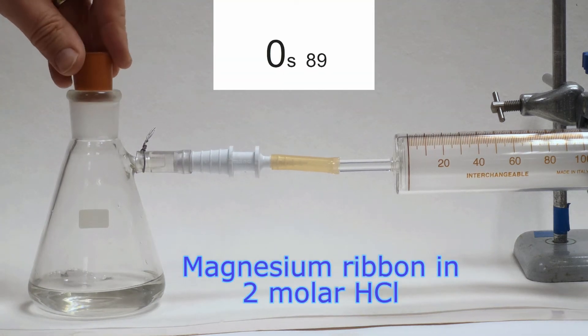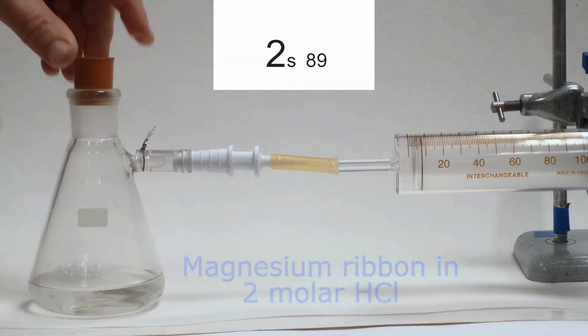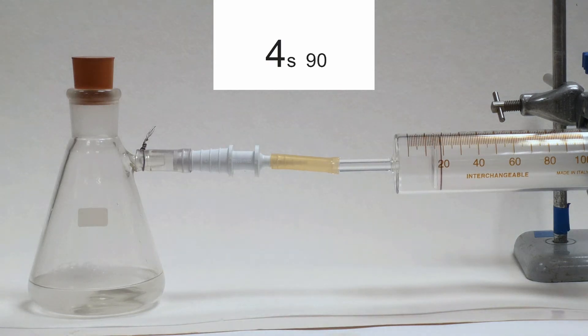We can use this to follow the rate of a reaction that produces gases, in this case magnesium ribbon with hydrochloric acid to produce hydrogen.